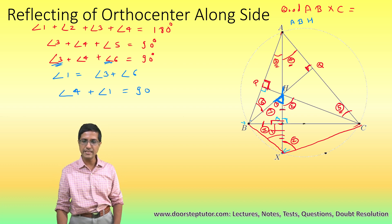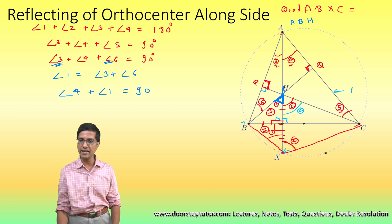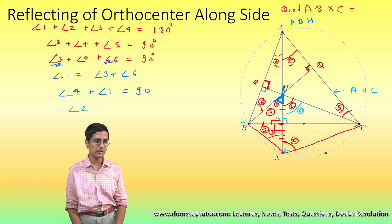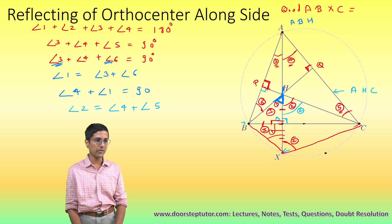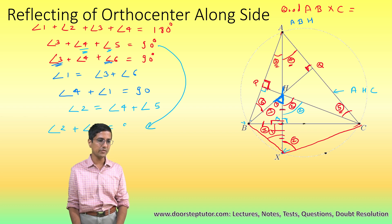Similarly, angle 2 is the exterior angle to triangle AHC. So angle 2 equals angle 4 plus angle 5. Since angle 4 plus angle 5 comes from our earlier equation, we can substitute to get angle 2 plus angle 3 equals 90 degrees.